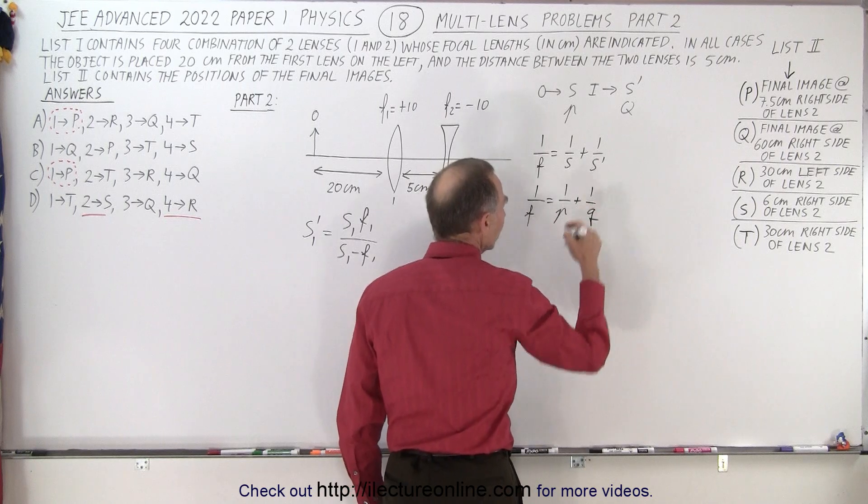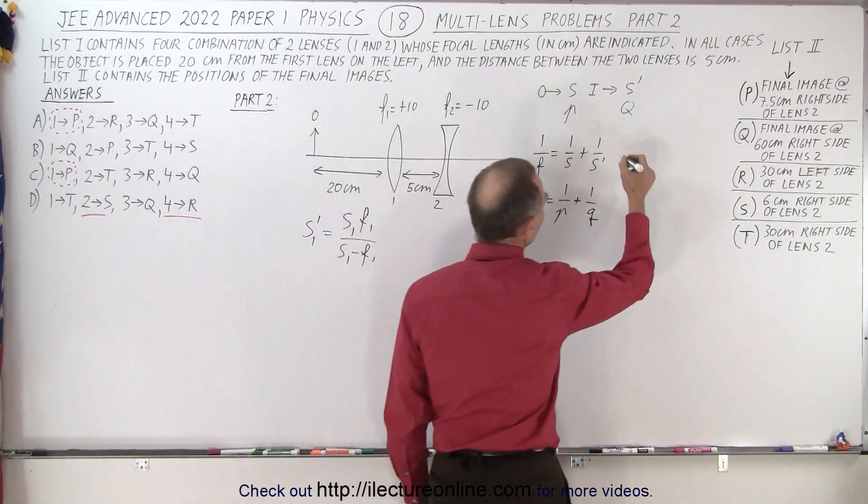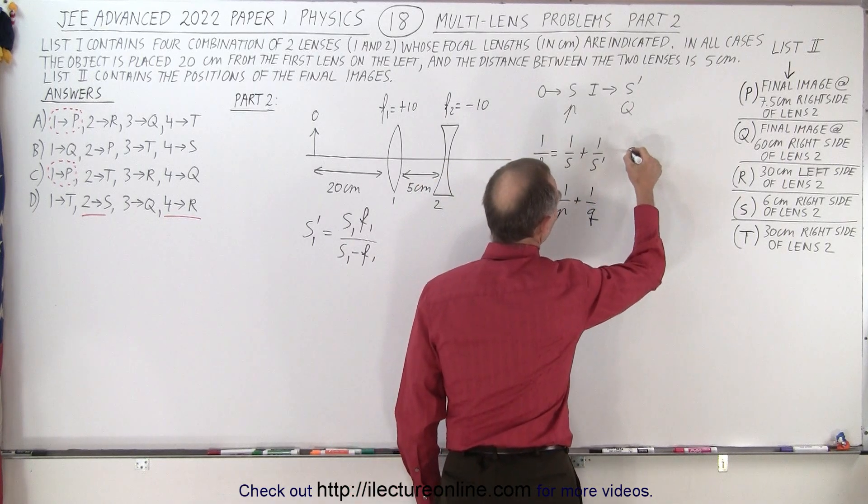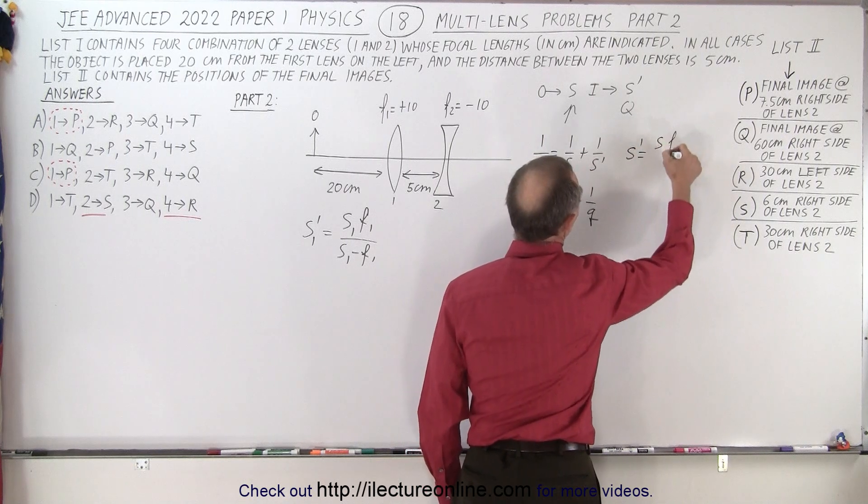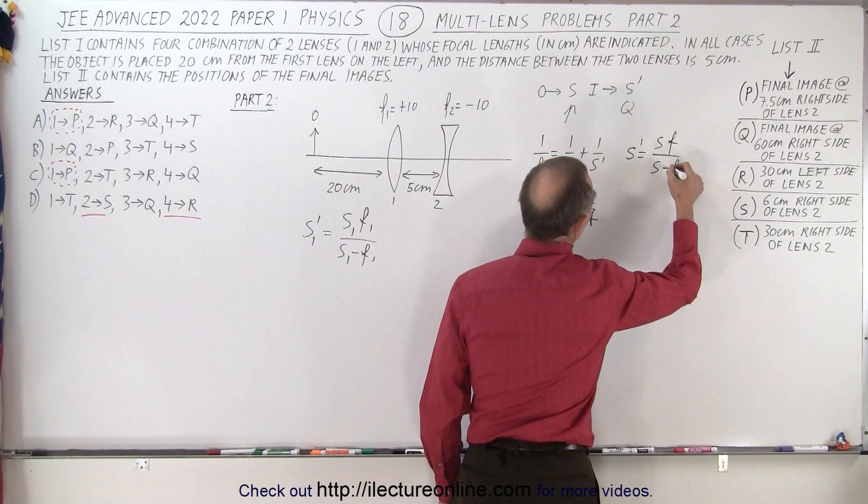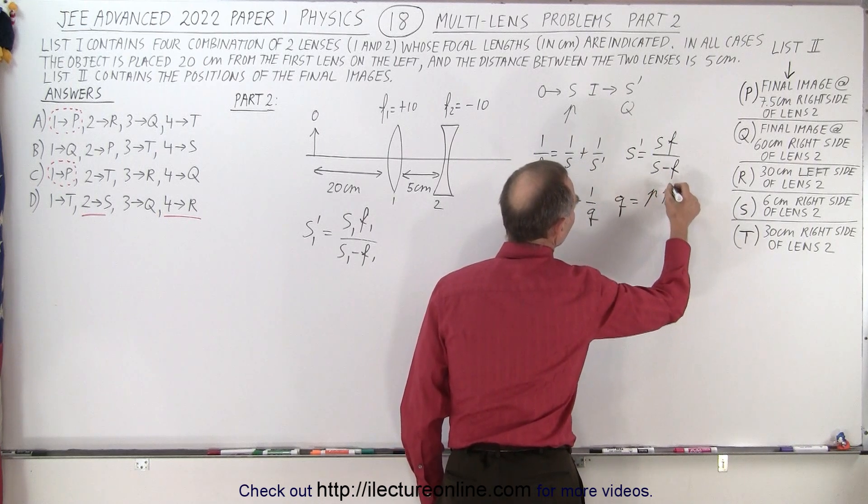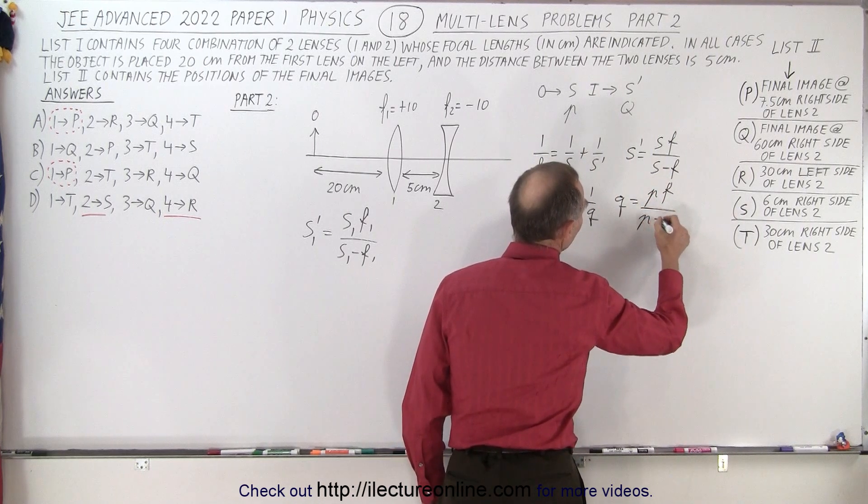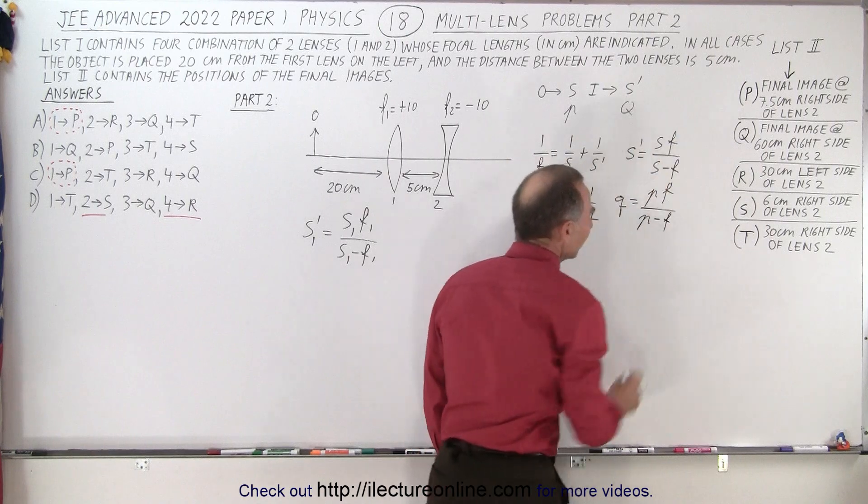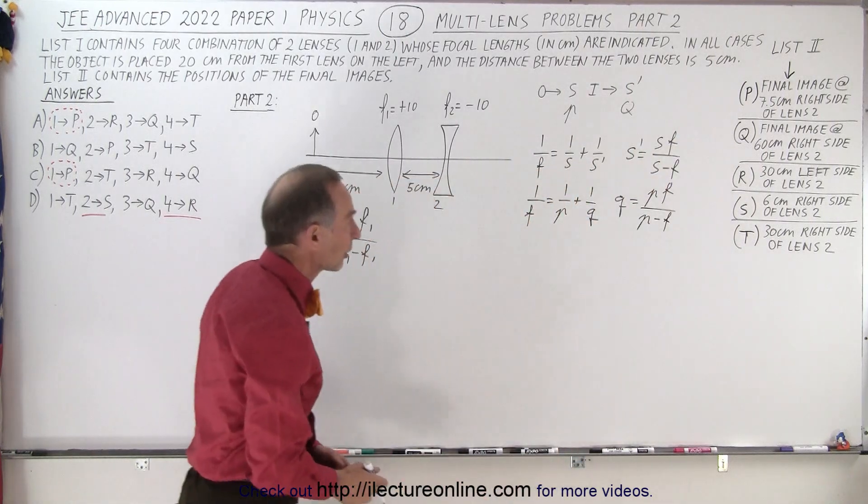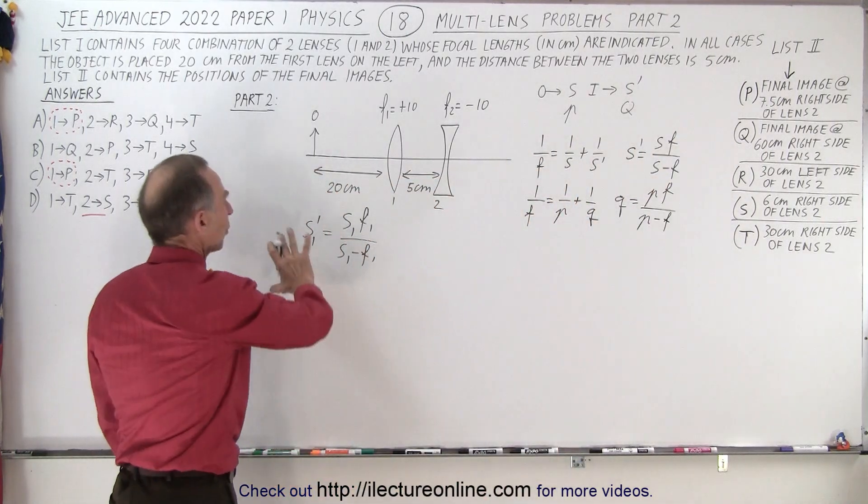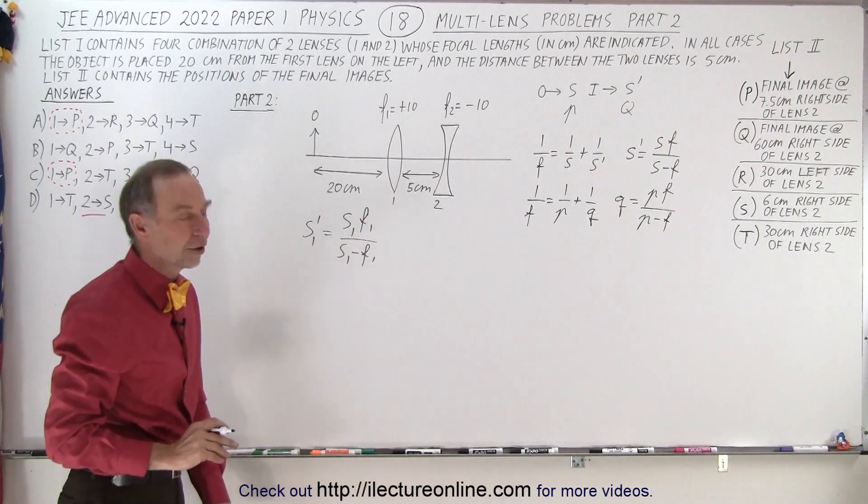So this can be solved algebraically for S prime is equal to S F divided by S minus F, or Q is equal to P F divided by P minus F. So I like to use S and S prime. I'm used to that instead of P and Q, but again this is where that came from just in case you're wondering.